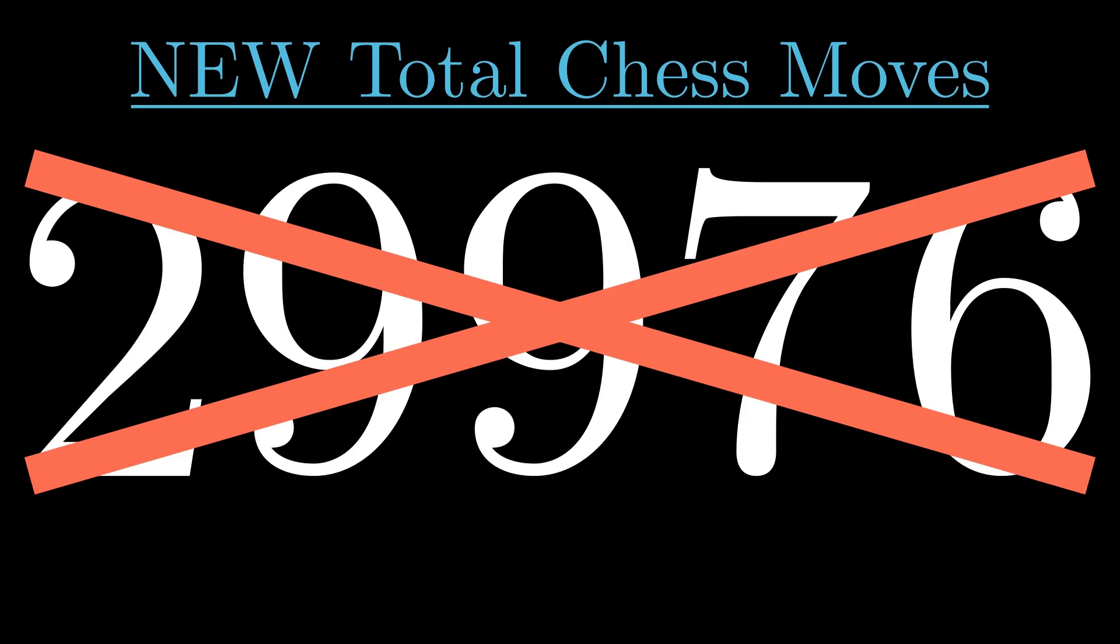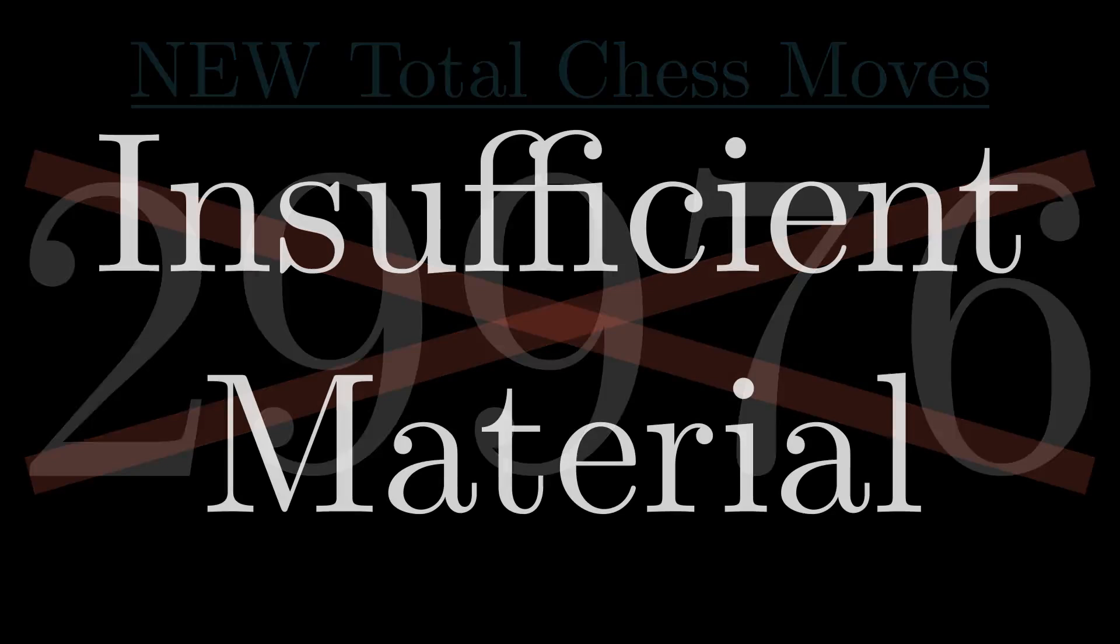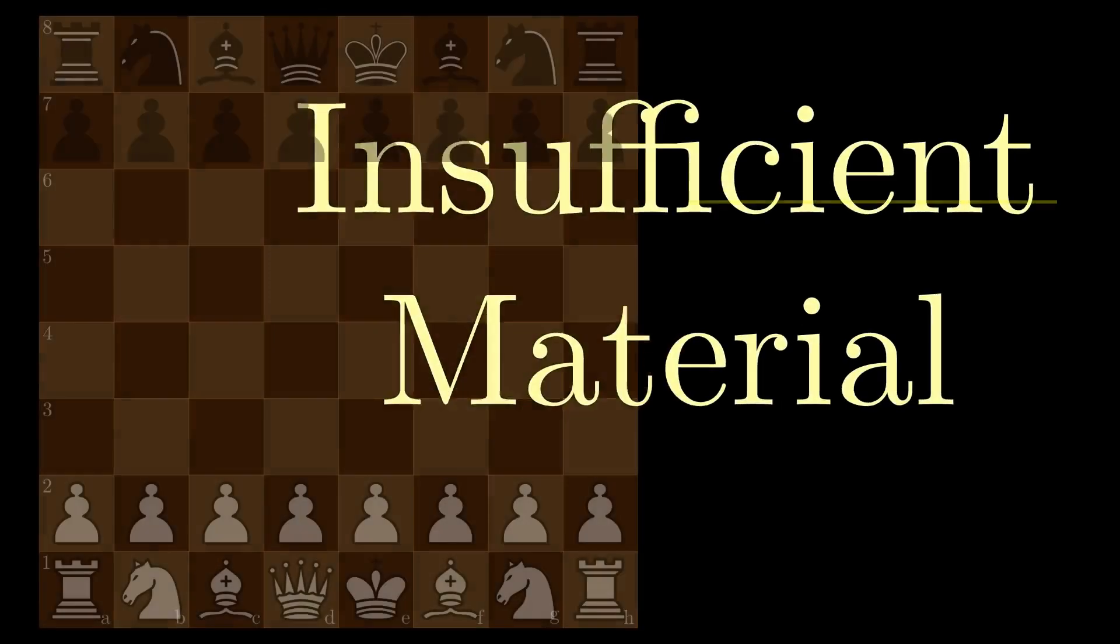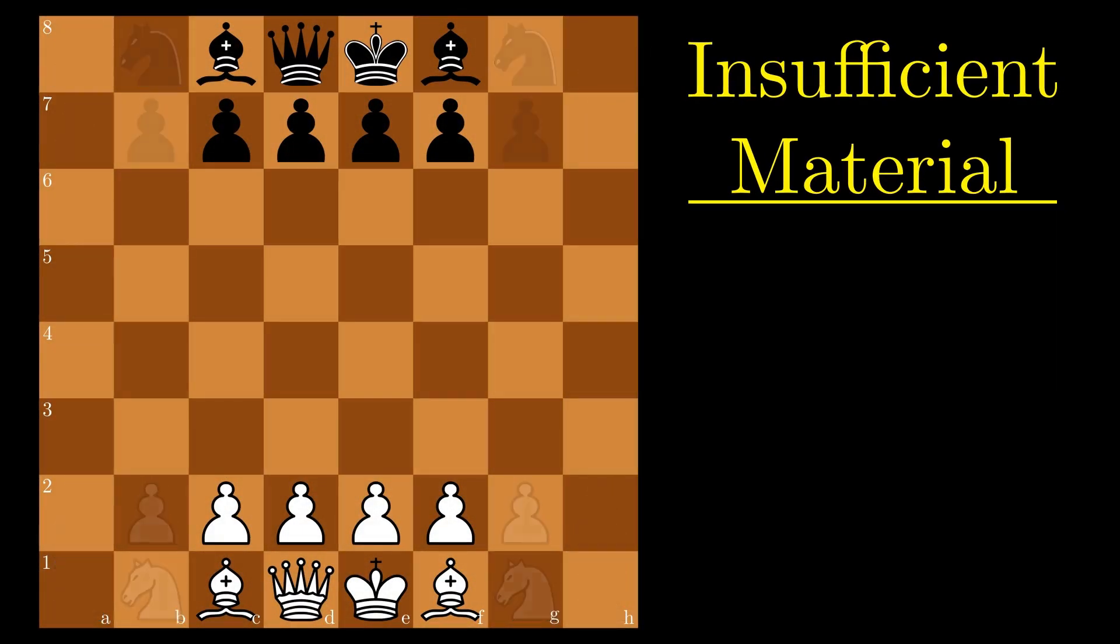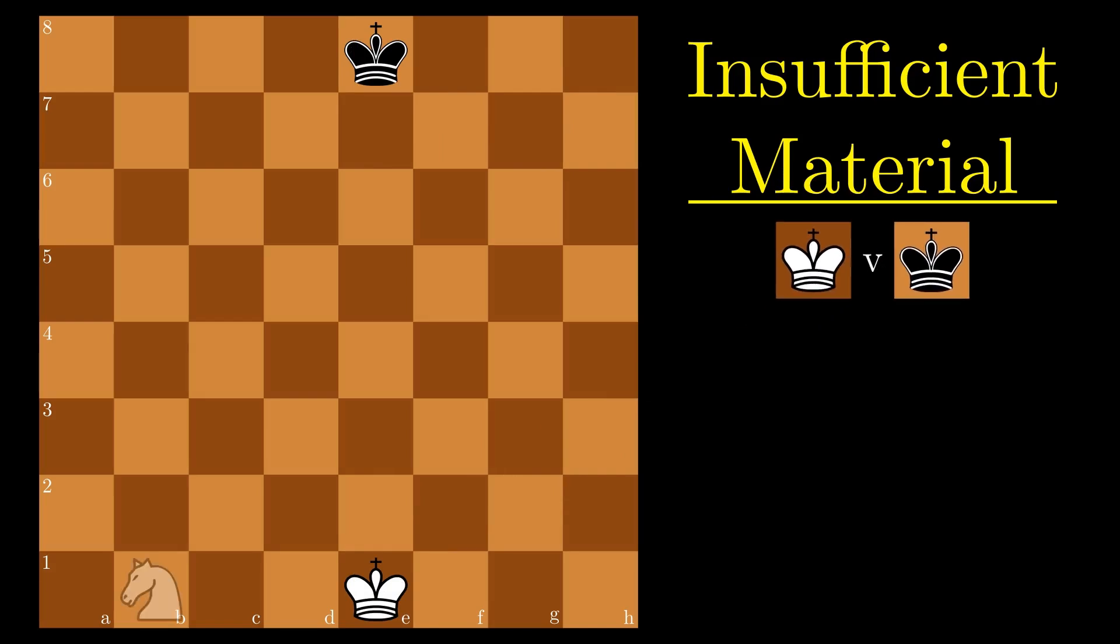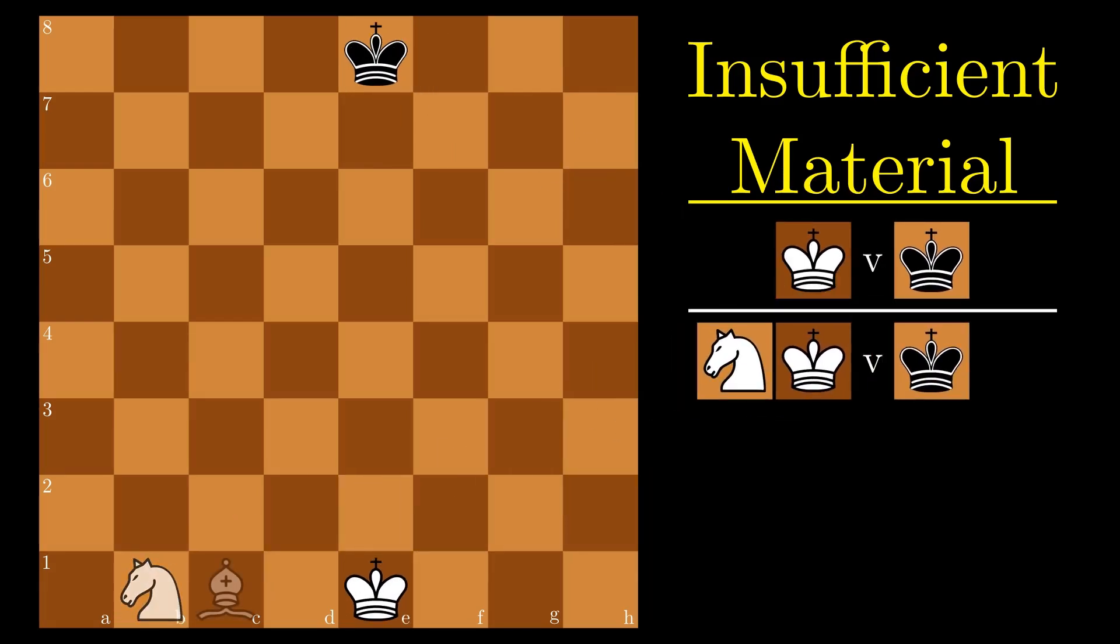Hopefully you got my tiny hint from the first sentence of the video because it's insufficient material. If you thought I was going to say threefold repetition or something else, convince me in the comments. So how little material is insufficient in the first place? The most obvious should be king vs king, but it can also occur if just one side has a knight or a bishop.